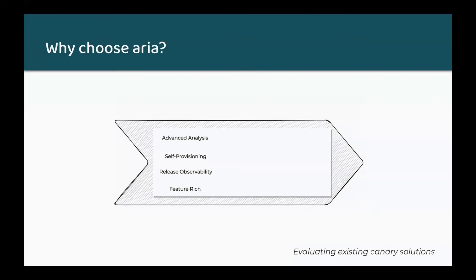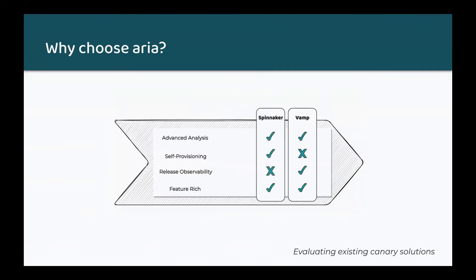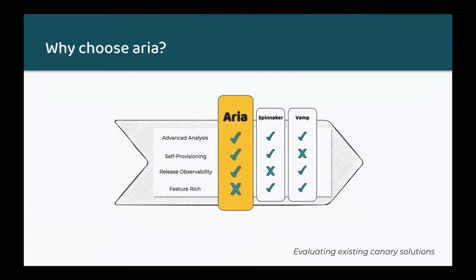Let's compare the existing standalone solutions which offer advanced statistical analysis techniques. The first is VAMP. This tool isn't self-provisioning. It's a SaaS solution, so it's rather expensive. It builds in release observability and it's very feature-rich. Spinnaker is an open source solution. It self-provisions, unlike VAMP, but it doesn't include release observability — you need to implement your own tooling for that. It's also very feature-rich. And then our tool, ARIA, provides advanced analysis. It's self-provisioning and includes release observability, but it's tailored specifically for canary deployments.